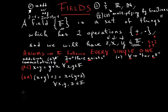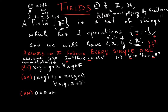The third axiom is additive neutral. This means you can add this element to anything and whatever you're adding it to will still remain the same. For addition, zero is our additive neutral — zero is part of the field. If you add zero to any number x, you don't change x; x remains x. This holds for all x in the field.